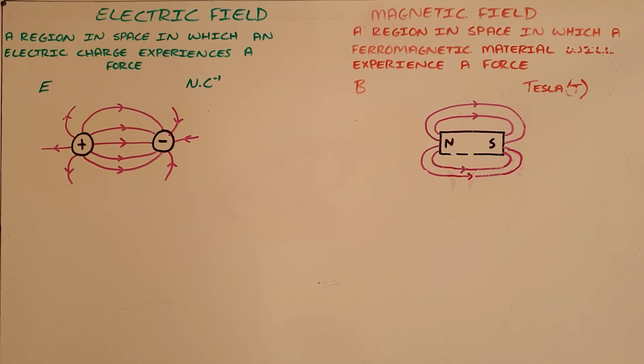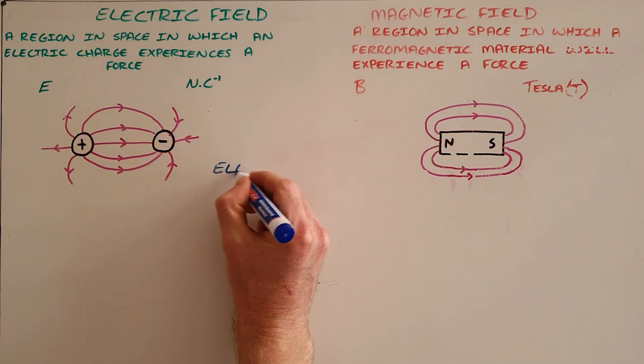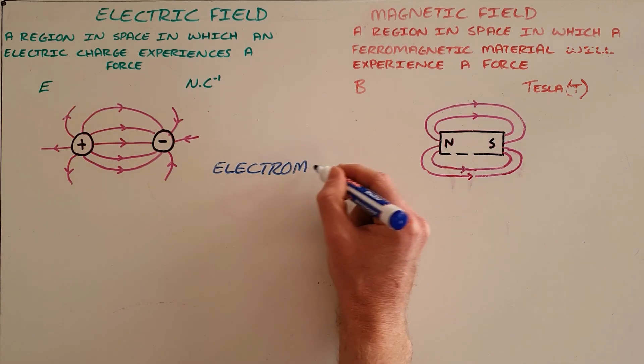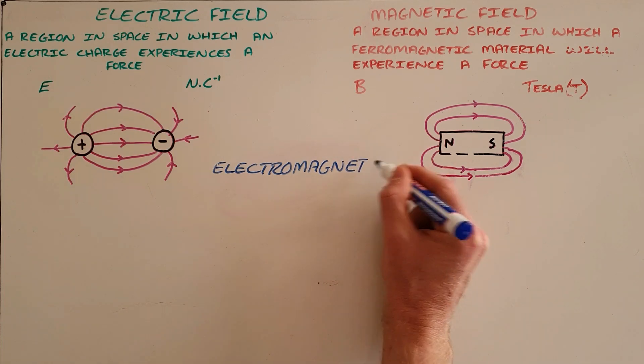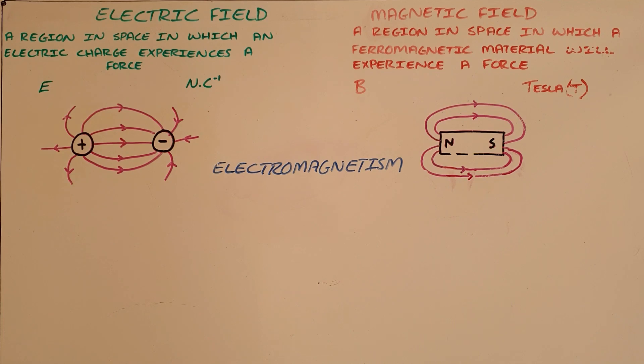What is important to realize is that these two fields are actually two sides of the same coin and that coin is called electromagnetism, where electromagnetism essentially explains the idea that the electric and magnetic fields are related to each other in a very simple way.